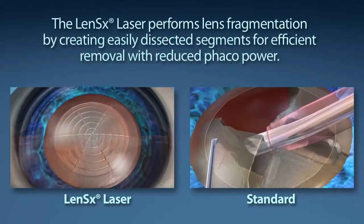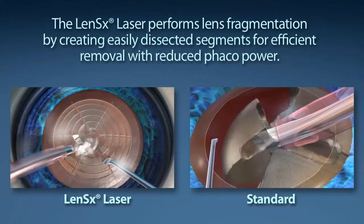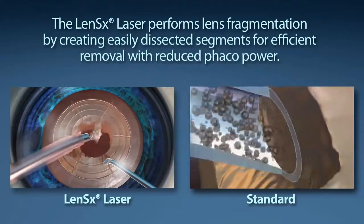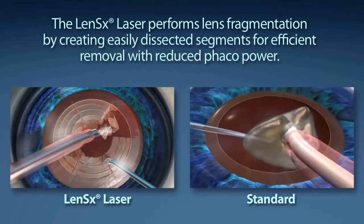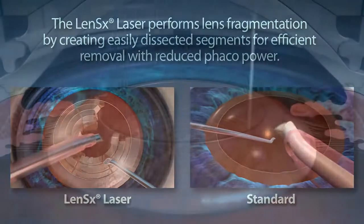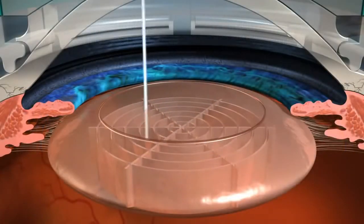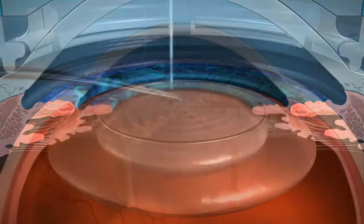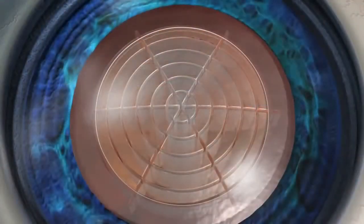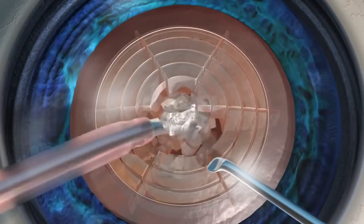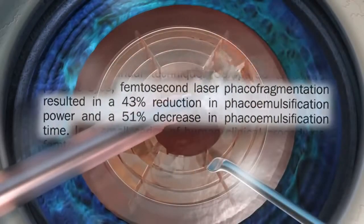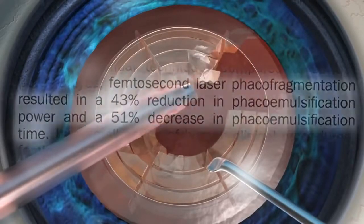Standard cataract surgery requires a phacoemulsification machine to segment and remove the content of the cataract. The goal of your surgeon is to reduce the amount of phaco energy used to remove your cataract. The LensX laser performs lens fragmentation, creating easily dissected segments for efficient removal with little or no phaco power. With the laser pulses utilized, the LensX laser provides the surgeon a 43% reduction in phaco power and a 51% reduction in phaco time compared to the standard cataract procedure.